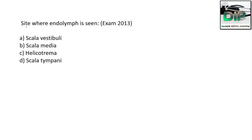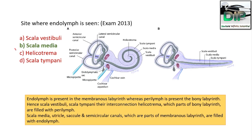Next question: The site where endolymph is seen — Option A: Scala vestibuli, Option B: Scala media, Option C: Helicotrema, Option D: Scala tympani. The correct answer is Scala media.